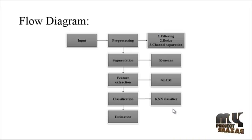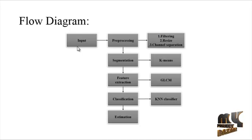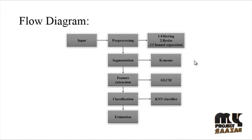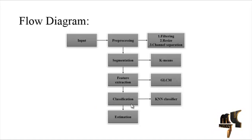Let us discuss the flow diagram of the process. First, click the input image from the database. Then pre-processing is applied, which includes filtering, resize, and channel separation. After pre-processing, segmentation is performed using the k-means clustering algorithm. Then feature extraction is done using the gray level co-occurrence matrix (GLCM).